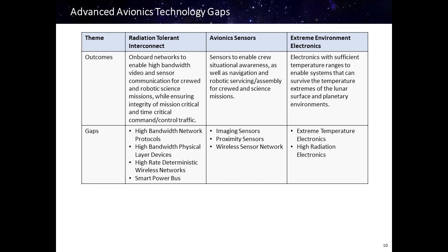We also need sensors to enable crew situational awareness as well as navigation and robotic servicing and assembly for crewed and science missions. Here we're looking for imaging sensors, proximity sensors, and wireless sensor networks. In the area of extreme environment electronics, we're looking for electronics that can withstand the extreme temperatures of lunar and planetary surfaces, as well as high radiation electronics that can withstand the high radiation environments of some planetary destinations.